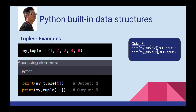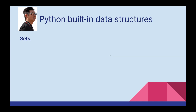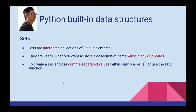Now for the next basic built-in data structure: sets. Sets are an unordered collection of unique elements. They are useful when you want to store a collection of items without any duplicates. To create a set, enclose comma-separated values within curly braces or use the set() function.